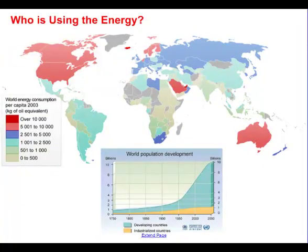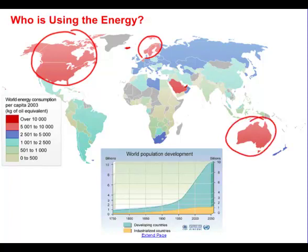It's interesting to look at who on the planet is using this energy. It becomes very clear that developed countries — like Canada, the USA, Europe including Norway, and Australia — use a tremendous amount of energy.